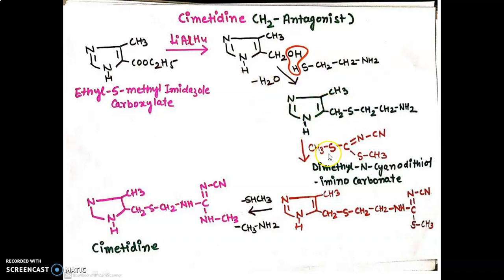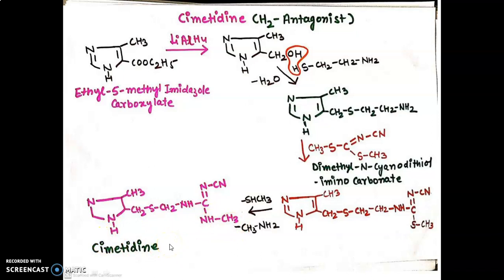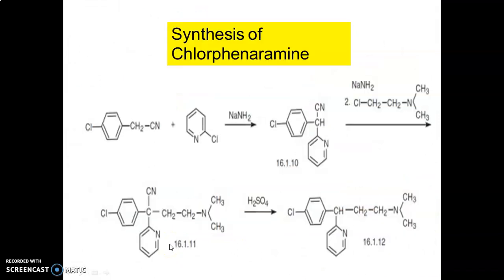This intermediate is further treated with diphenyl N-cyanoiminocarbonate. By this way we obtain a compound, which after substitution with the methylamino group gives formation of cimetidine.